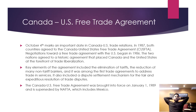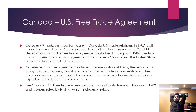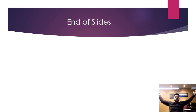The Canada-US Free Trade Agreement: negotiations toward a free trade agreement with the US began in 1986. These two nations agreed to a historic agreement that placed Canada and the United States at the forefront of trade liberalization, called the CUSFTA — the Canada-United States Free Trade Agreement — which basically eliminated tariffs and was among the first trade agreements to address trade in services. Then in 1989, Mexico was brought in, which turned it into NAFTA, the North American Free Trade Agreement, since North America includes Mexico, the US, and Canada. End of slides — see you guys in class and we will go over everything from slides one to slides two.